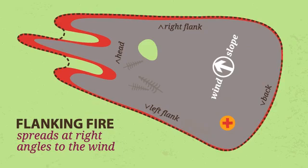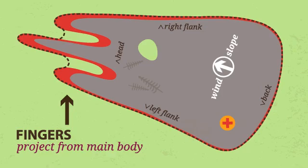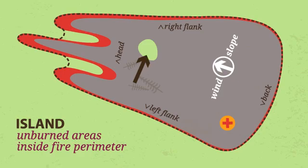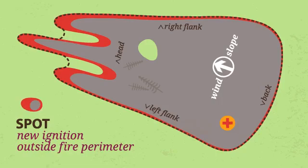Fires can take other shapes depending on fuels, topography, and weather. Fingers are the long, narrow extensions of a fire projecting from the main body. The unburned indentations in the fire perimeter formed by fingers are called pockets. An island is an area of unburned fuel inside the fire perimeter. And a spot fire is a new fire ignited outside the main fire perimeter.